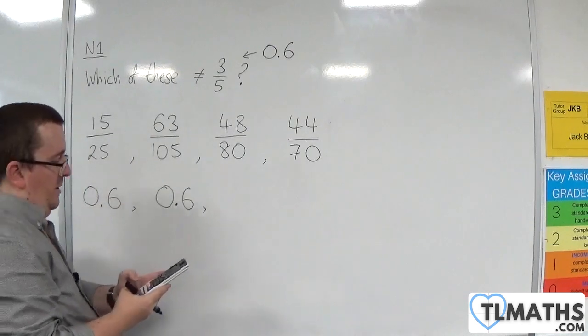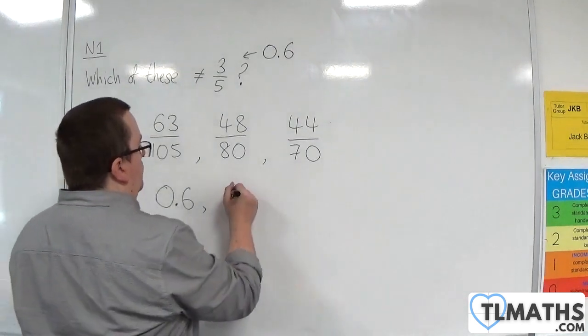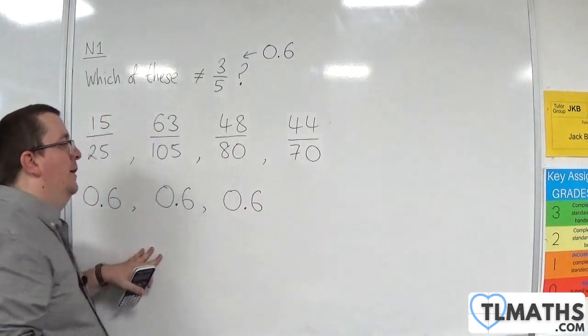48 divided by 80 is 0.6. So that's not the one we're looking for.